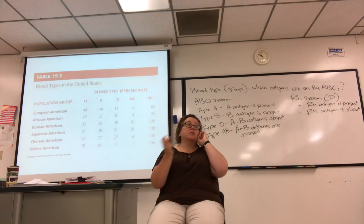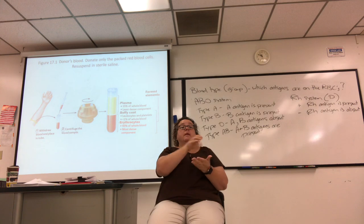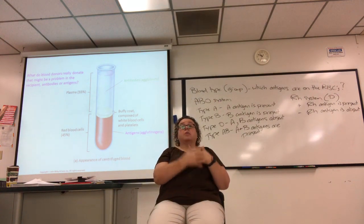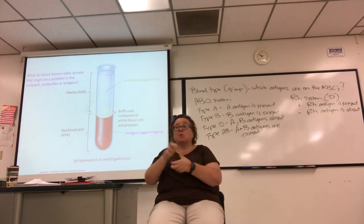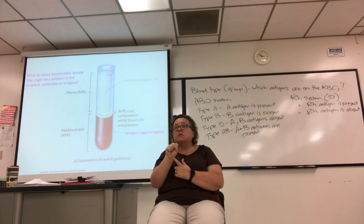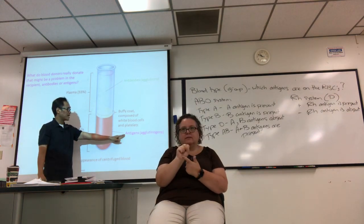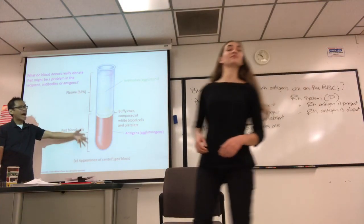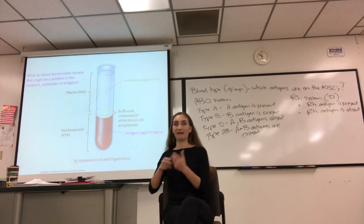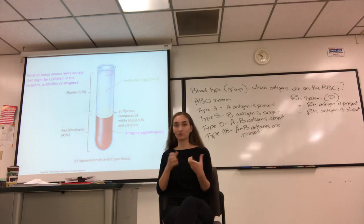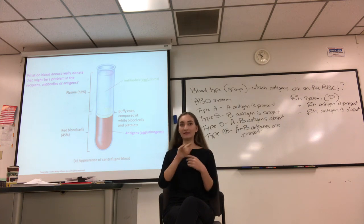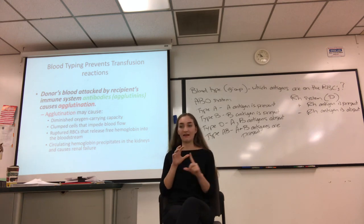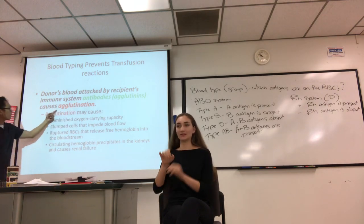When you donate blood, you're mostly donating packed RBCs — the antigens on those RBCs are what might be a problem in the recipient. 'Antigen' means antibody generator. The donor's RBCs are attacked by the recipient's immune system antibodies, also called agglutinins, which may cause agglutination. Blood typing prevents these types of transfusion reactions.